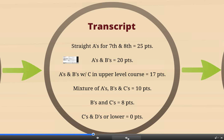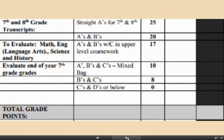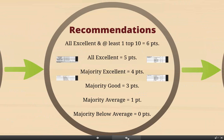So we did the standardized test and the transcripts — you can see the different point categories. In the standardized test category it's 18 points; the transcript is 25 points. So if somebody's got all their points in both categories — 25 plus 18 — they're scoring pretty high and have some latitude to lose points in some of the other categories. But if you get a C, you're going to have a lot of work ahead of you.